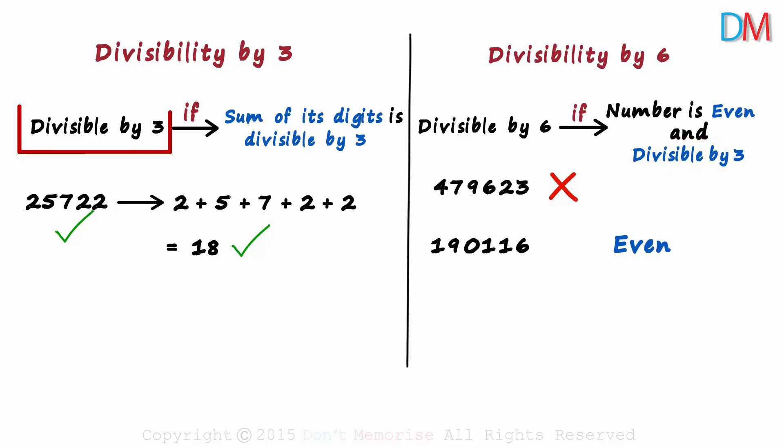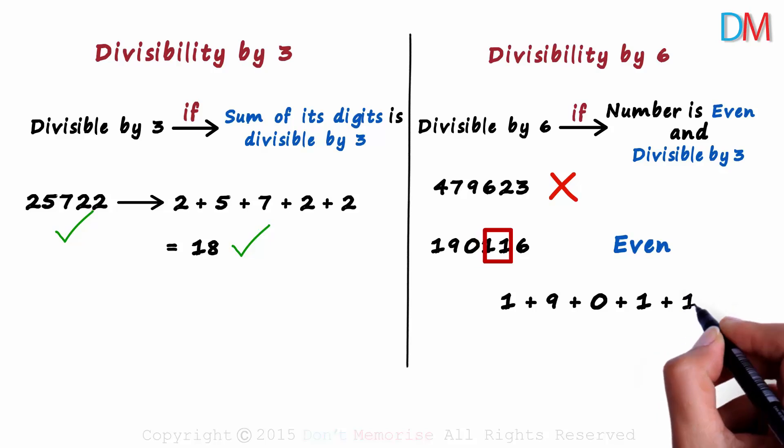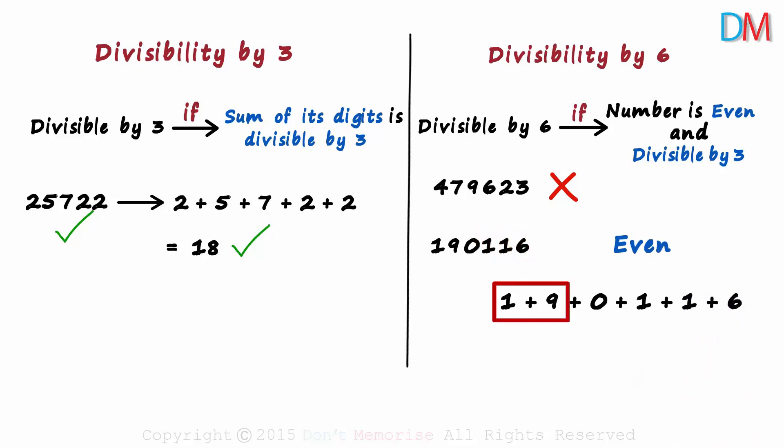A number is divisible by 3 if the sum of its digits is divisible by 3. So we find out the sum of the digits: 1 plus 9 plus 0 plus 1 plus 1 plus 6. 1 plus 9 is 10 plus 2 is 12 plus 6 gives us 18.